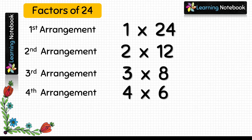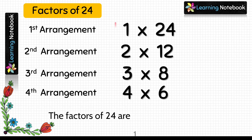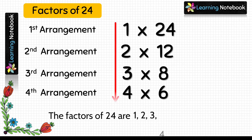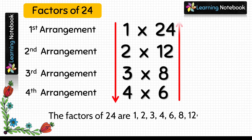Now let's write factors of 24. We will start from top to bottom: 1, 2, 3, 4. Now write from bottom to top: 6, 8, 12, and 24. So these are the factors of 24.